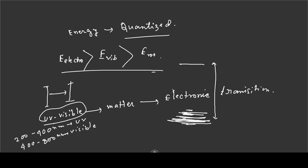The visible region goes to red, and beyond red is infrared. Beyond the UV side is ultraviolet. The visible range is approximately 400 nanometers, and this UV region interacts with molecular electronic transitions.